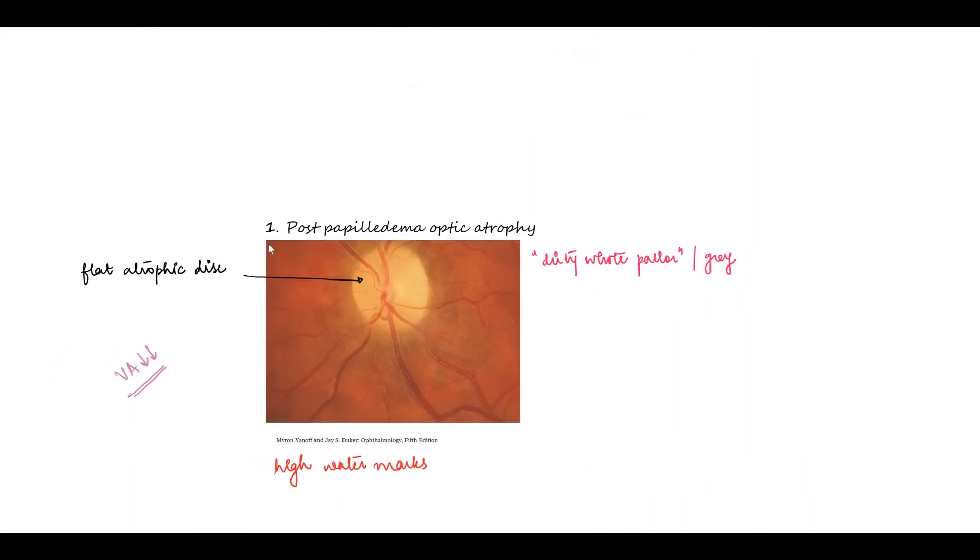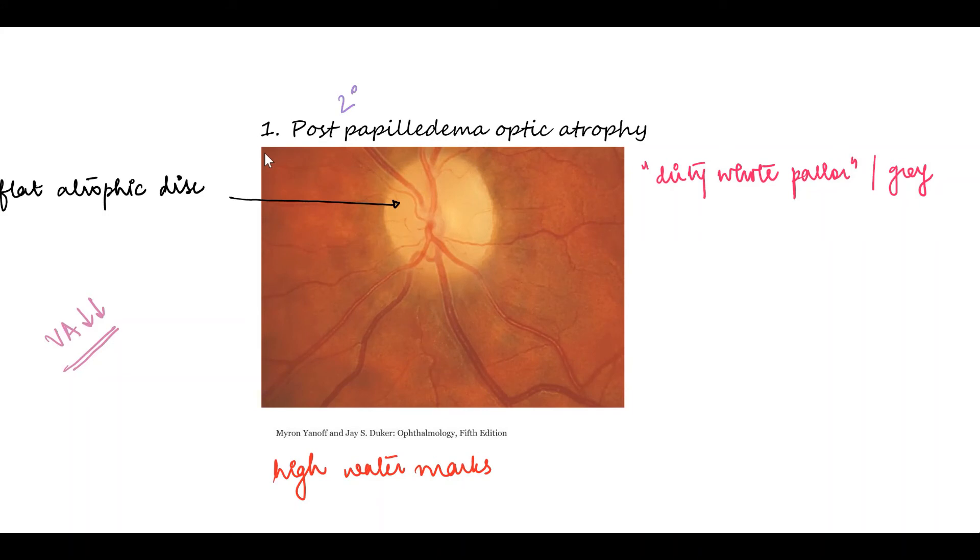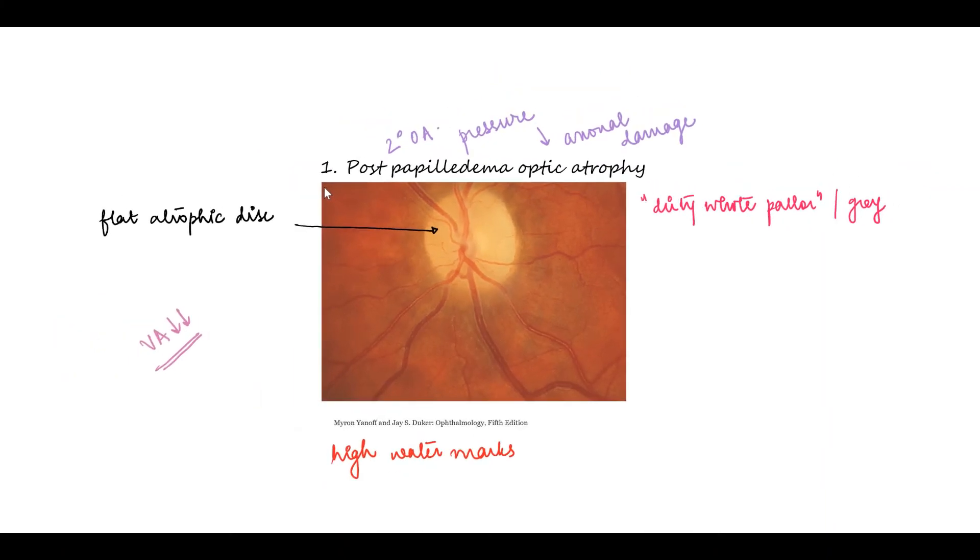Moving on to the post-papilledema optic atrophy stage. This is the stage of secondary optic atrophy where there is pressure-induced axonal damage. Because of the chronic long-standing pressure and the ischemia, here we can see that the disc is characteristically flat and atrophic. Also it is no longer hyperemic and it has a dirty white or grayish white pallor. The vision is dropped.